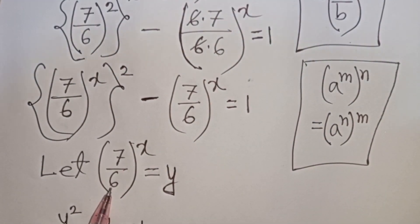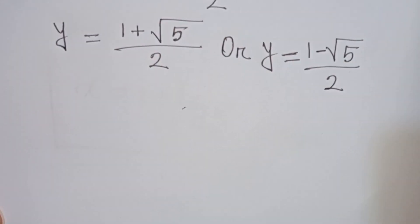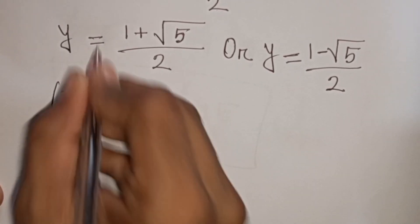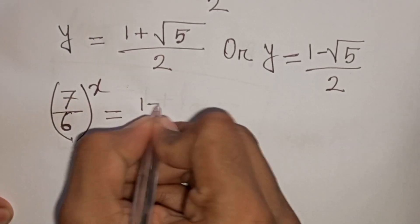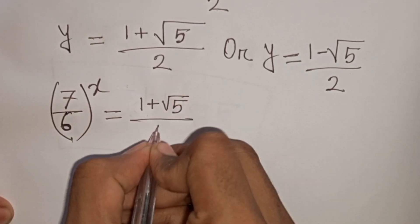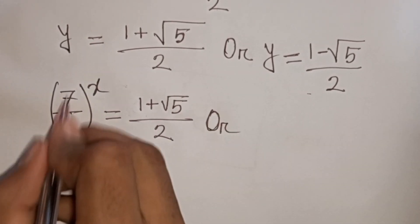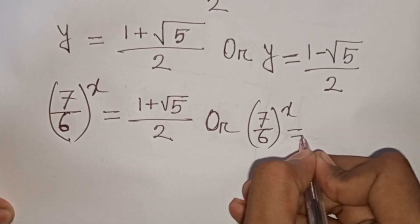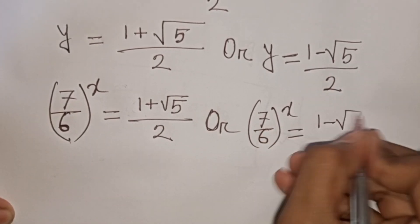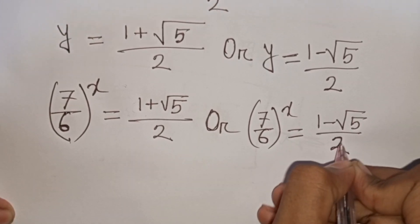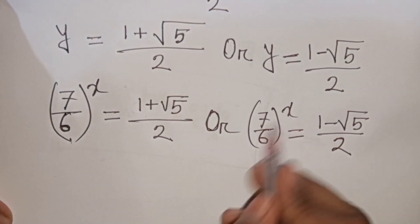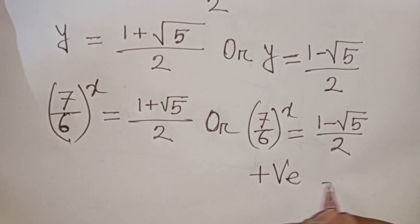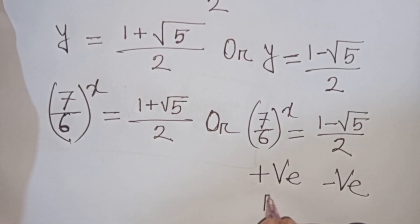Remember y = (7/6)^x. So (7/6)^x = (1+√5)/2 or (7/6)^x = (1−√5)/2. Since (7/6) raised to any power is always positive, and (1−√5)/2 is negative, the second case is rejected.